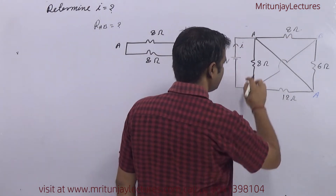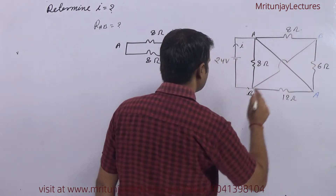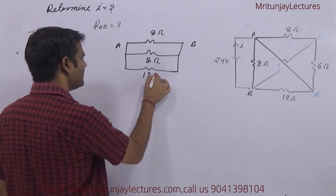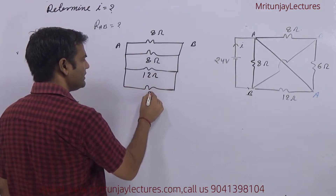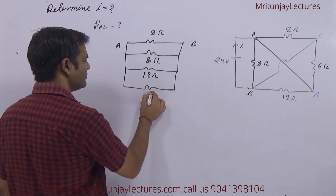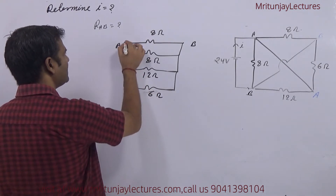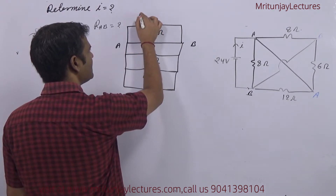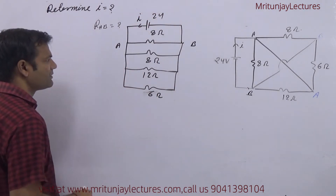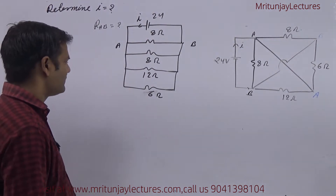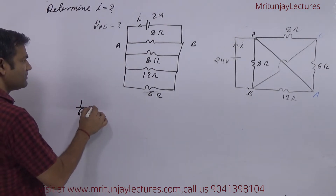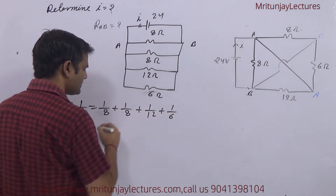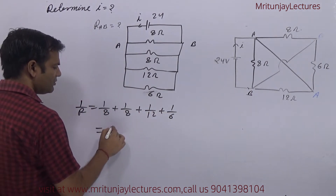Between A and B, all four resistances are in parallel. That is six ohm and this is six ohm. For equivalent resistance: one by R equals one by eight plus one by eight plus one by twelve plus one by six. So that gives two by eight.